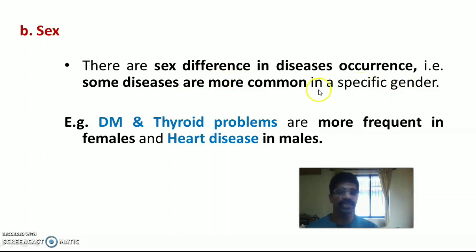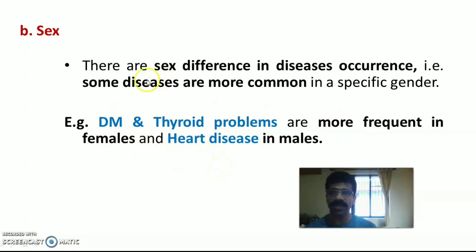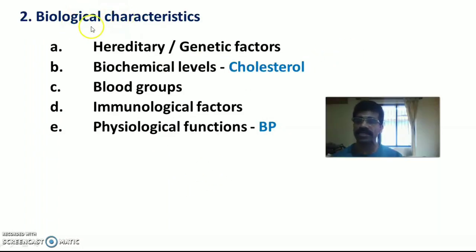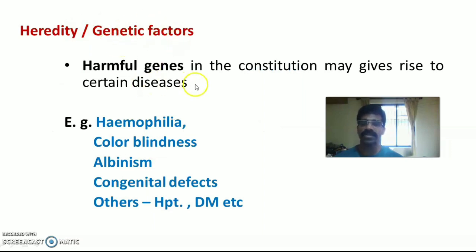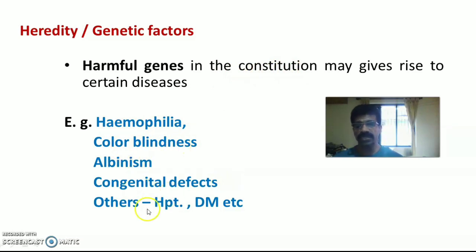There are sex differences in disease occurrence: for example, diabetes mellitus and thyroid problems are more frequent in females, whereas heart diseases are more common in males. The second category is biological characteristics, which includes hereditary or genetic factors, immunological factors or immunity status, and physiological functions. Some harmful genes may give rise to diseases such as hemophilia, colorblindness, albinism, congenital defects, hypertension, and diabetes.